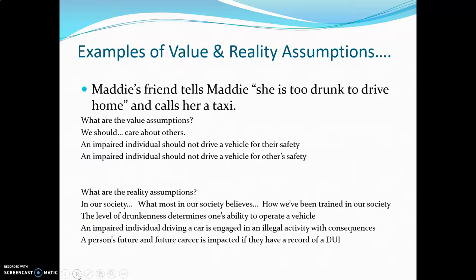Here's another example. If Maddie's friend tells Maddie that she is too drunk to drive home and calls for a taxi — if you're first going to think about the value assumptions — they're based on values. Her friend sees the world as how the world should be. Her friend must believe that we should care about others, and would have the assumption that an impaired individual should not drive a vehicle for their own safety, and also for others' safety. So in just this little short sentence, she is implying and assuming all of this.